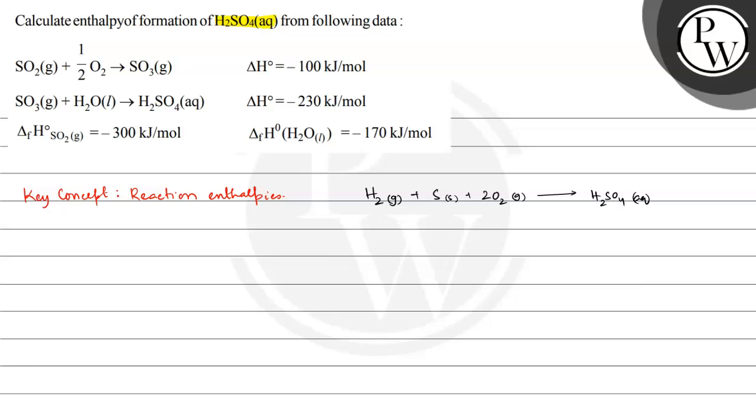Now we can see that H2SO4 aqueous is in the product side. In this second reaction, H2SO4 aqueous is in the product side, so we have to add this. Firstly, we have to add this equation: SO3 gas plus H2O liquid giving H2SO4 aqueous. This reaction enthalpy delta H0 is equal to minus 230 kJ per mole.